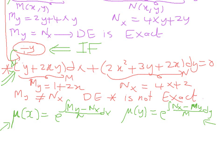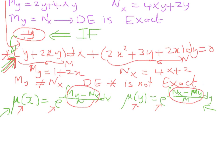The procedure is: first check if (M_y − N_x)/N is a function of x only — if so, find μ(x) = e to the power of that integral. Otherwise, check if (N_x − M_y)/M is a function of y only — if so, find μ(y) = e to the power of that integral. If neither works, we must try other methods. Let us apply these rules to the differential equation we know is not exact.